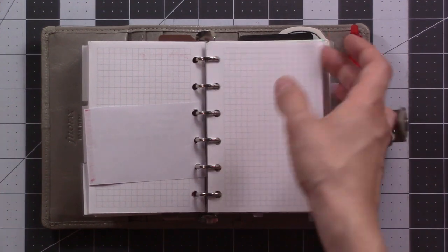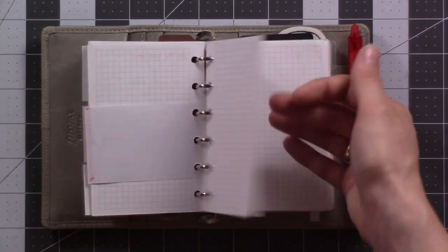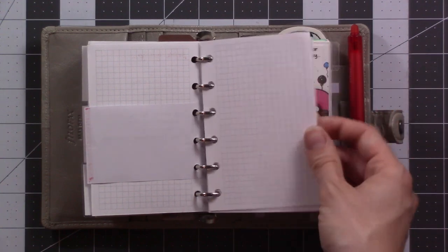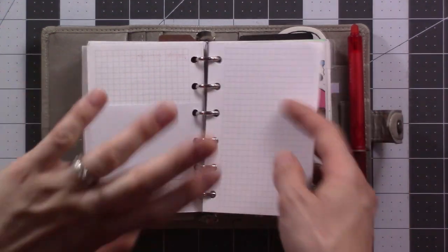And then there's extra blank paper here or grid paper for other spreads of things if I need it for while I'm there. Notes, I guess anything for Comic-Con is going to go here.